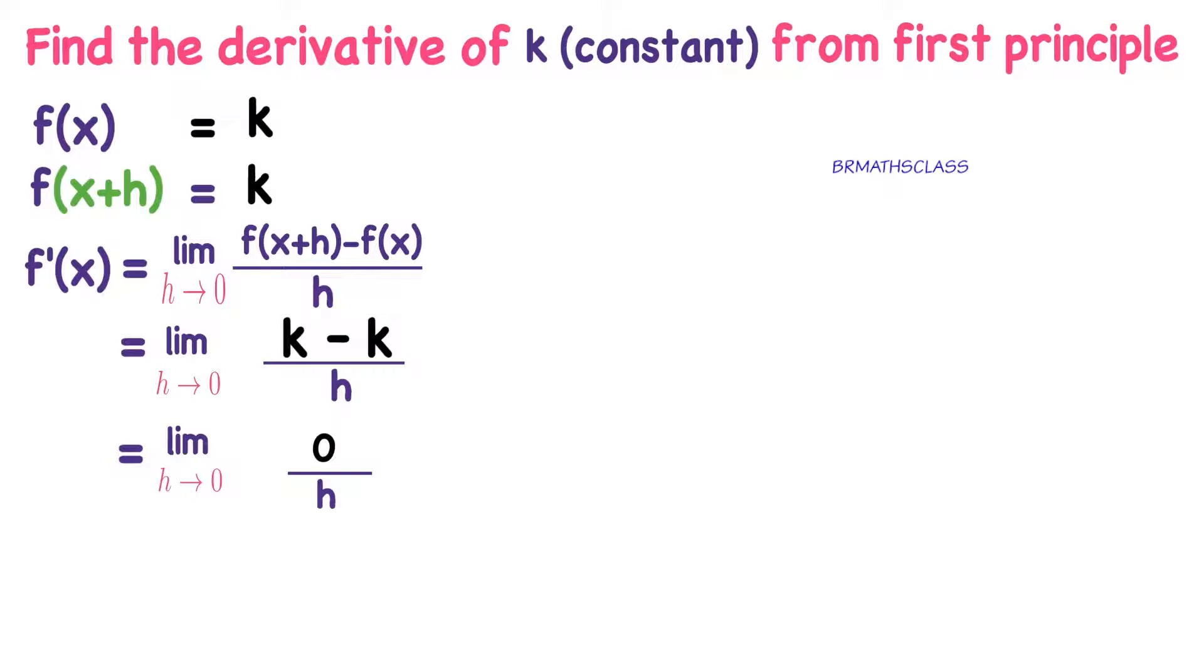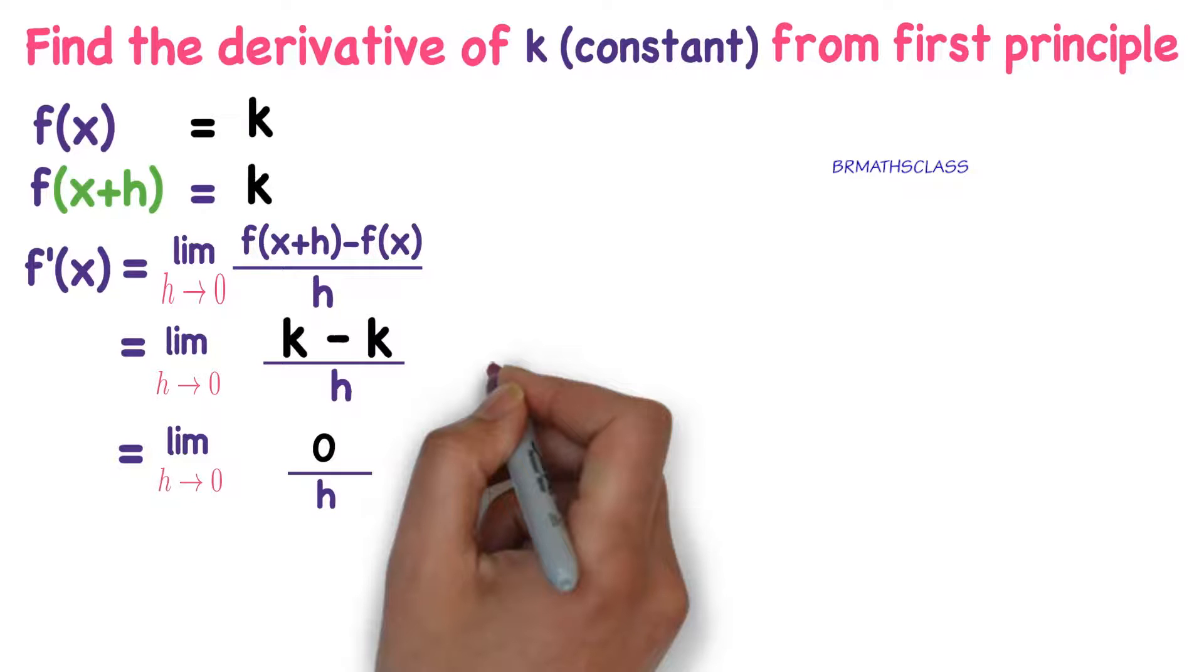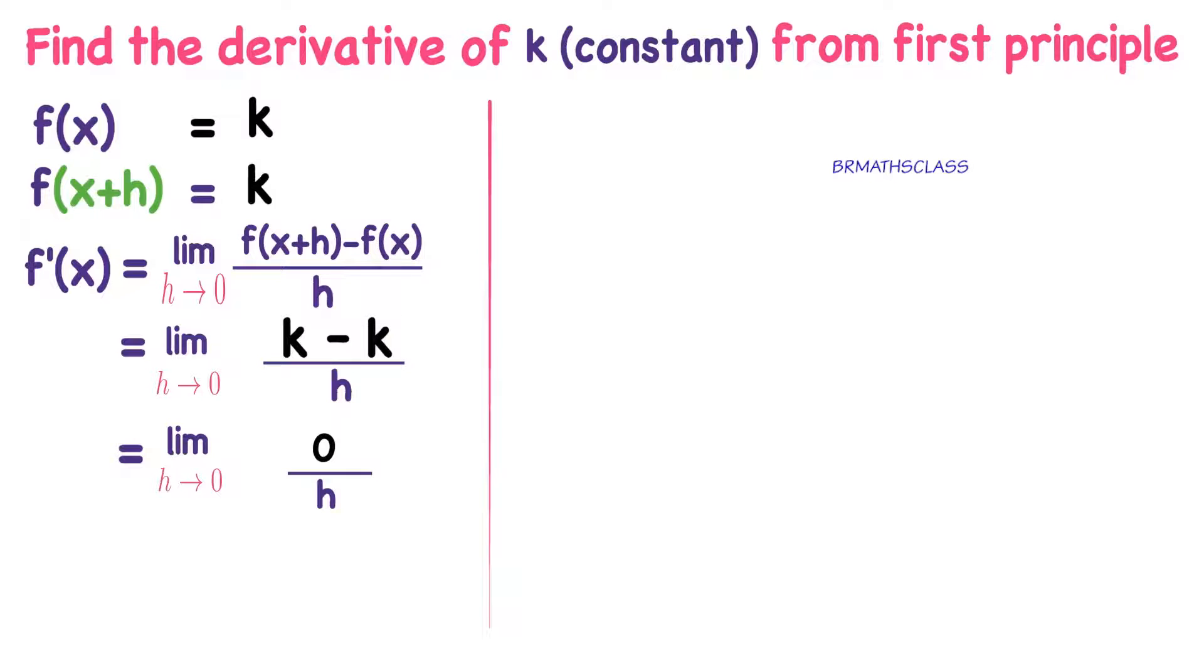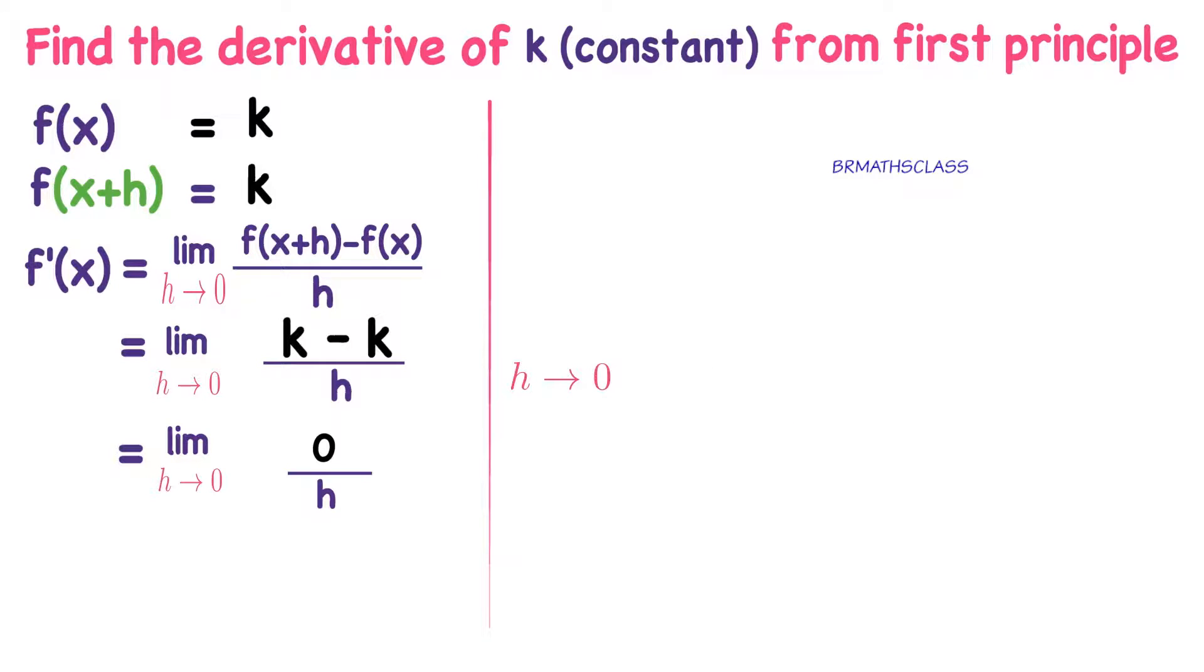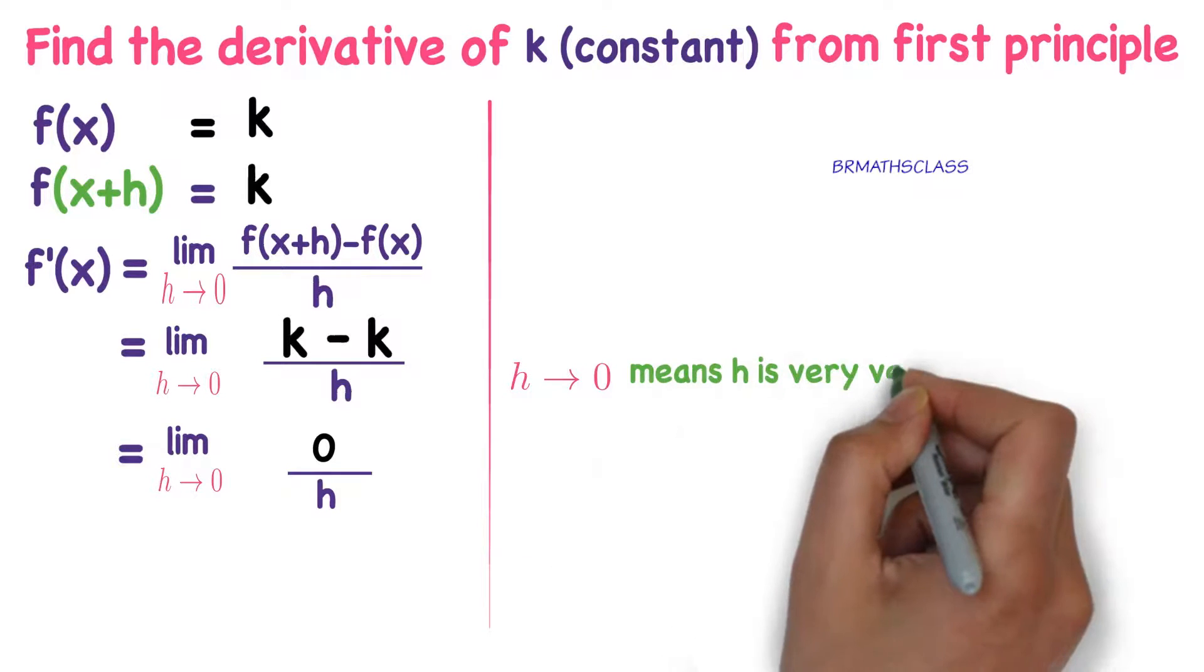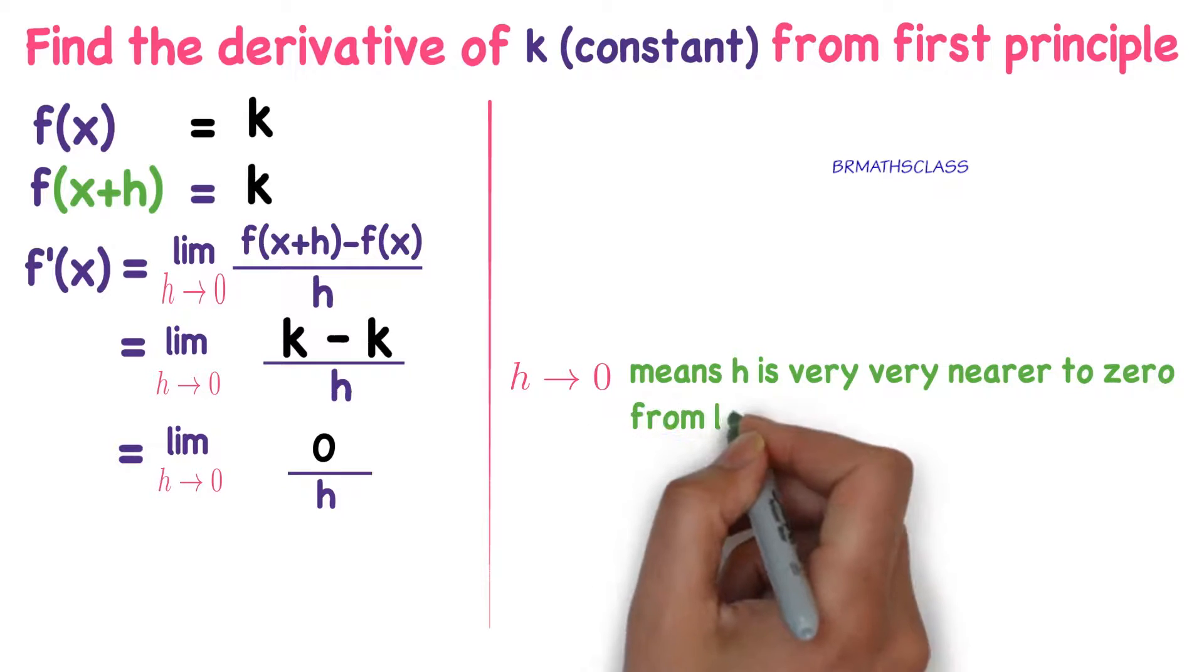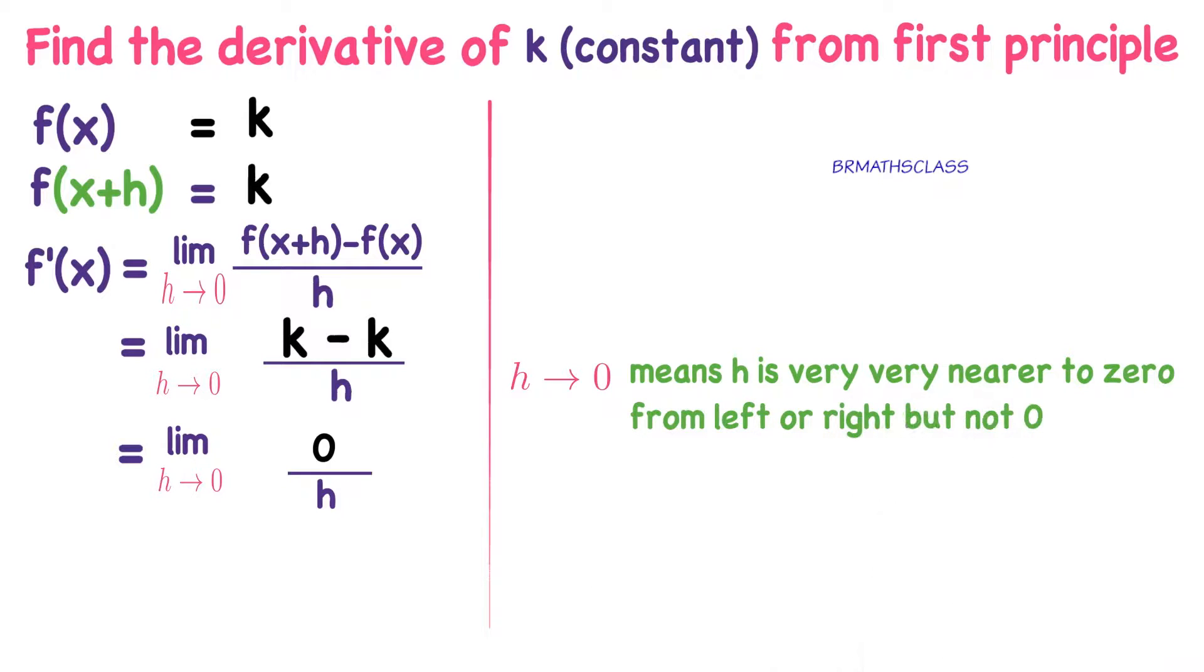Here we have to observe a few things. We know that h approaches 0. What does it mean? h approaches to 0 means h is very very nearer to 0 from left or right, but not 0.